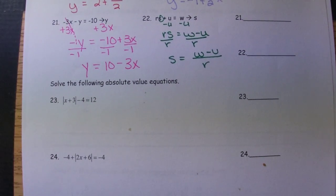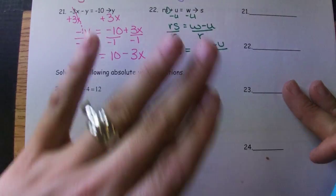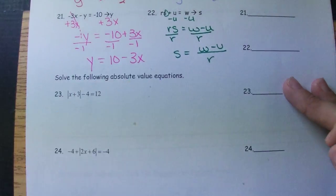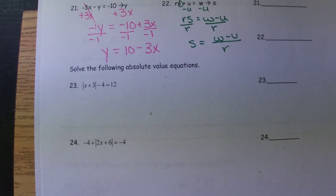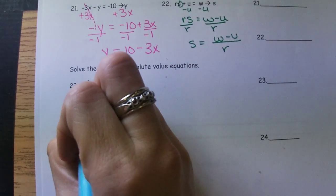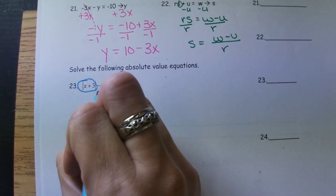Okay, then we have some absolute value problems. I don't know what is all over this paper. We're just going to deal with it. So 23. Here's what's inside the absolute value. That 4 is not, so we need to move that first.